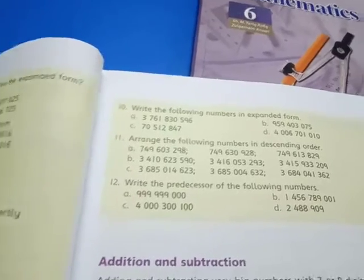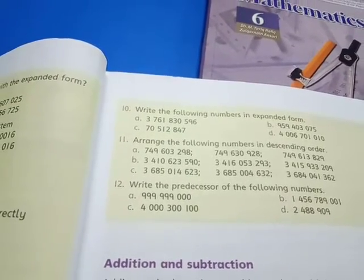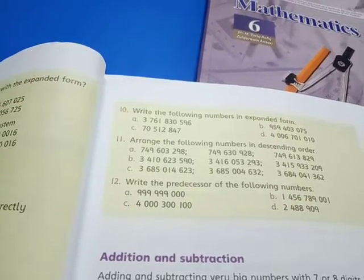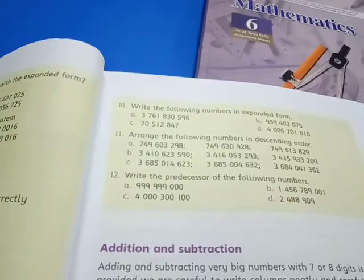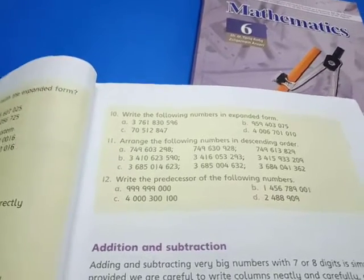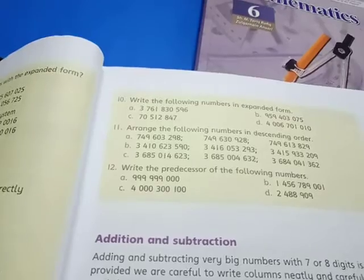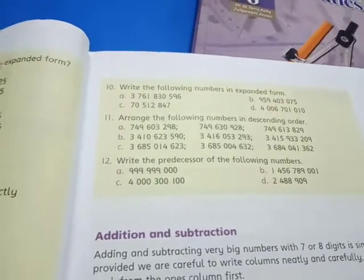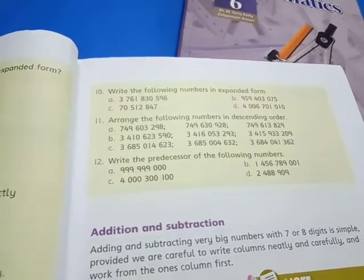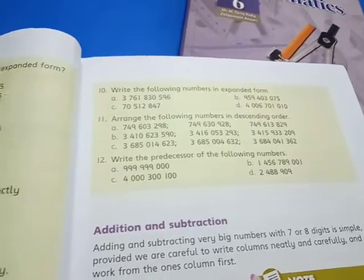Question number 10: you have to write the numbers in expanded form and arrange the numbers in descending order. Descending order means from large to small. Question number 12: you have to write the predecessor, which means you have to write one step before the given number.